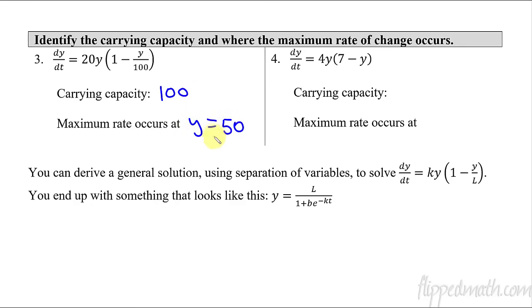Then here we have, again, this is now the L. So instead of y over a number, it's L minus y. So the carrying capacity is 7. And then the maximum rate occurs at y equals halfway up to that carrying capacity, which is 7 halves or 3.5.